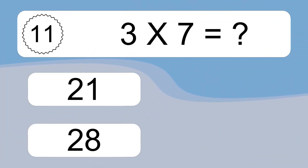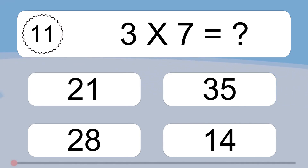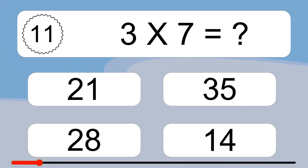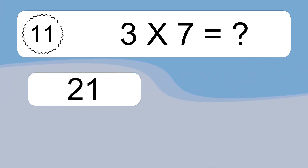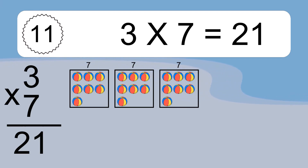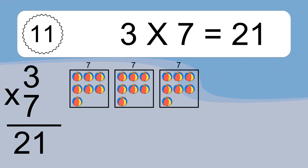3 times 7 equals what? 3 times 7 equals 21. We have 3 boxes, and each box has 7 colorful balls inside. If you count all the balls in all the boxes together, you will have 3 times 7 balls. This equals 21 balls.